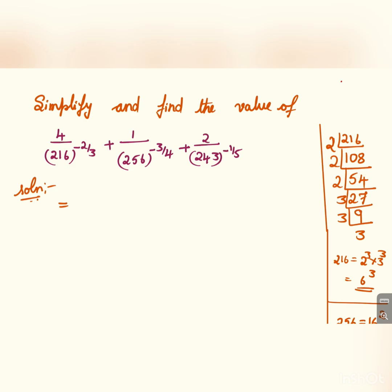4 divided by 216 can be written as 2 cube into 3 cube. 2 cube into 3 cube is 6 cube, and I will write down 6 to the power 3, whole to the power minus 2 by 3.